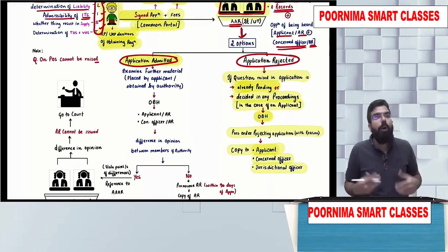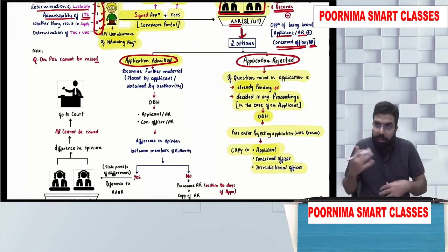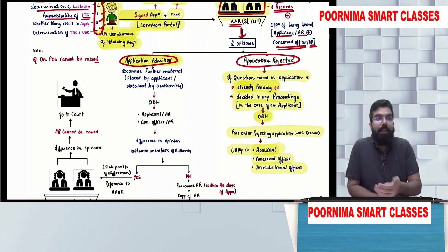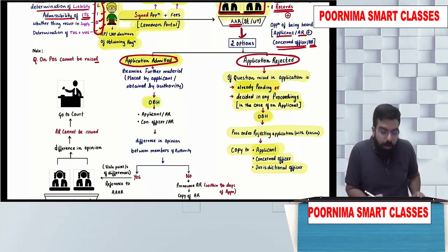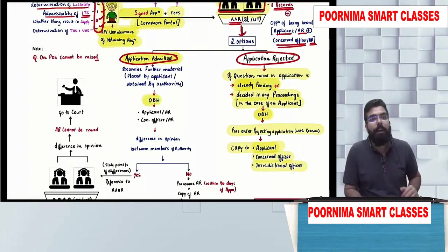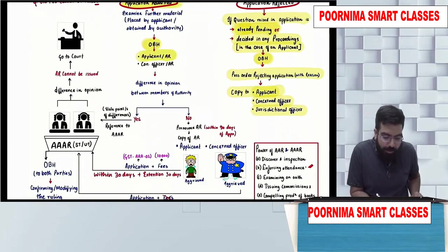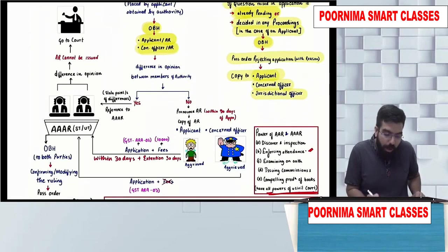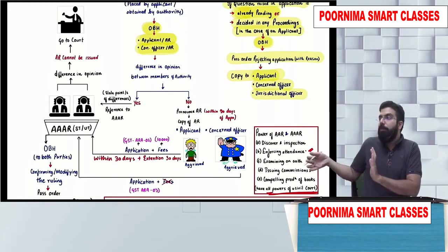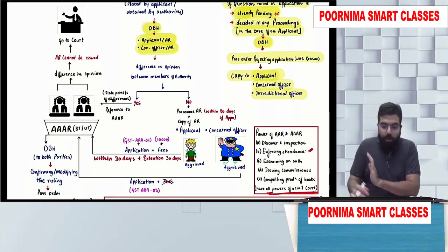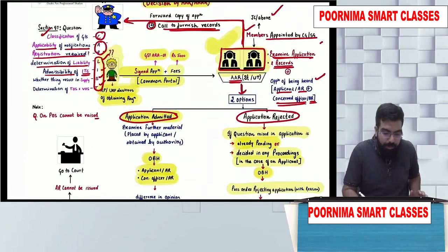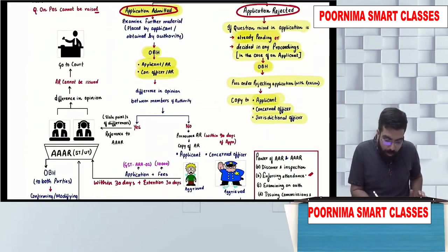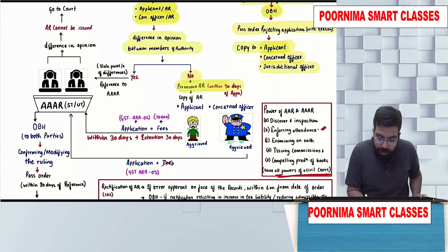If the application is admitted, they will go ahead and ask for further details, examine the details, then give an opportunity of being heard to the applicant or his authorized representative and the concerned officer or his authorized representative. If the members of AAR do not have any difference of opinion, they will go ahead and pronounce the advance ruling within 90 days.